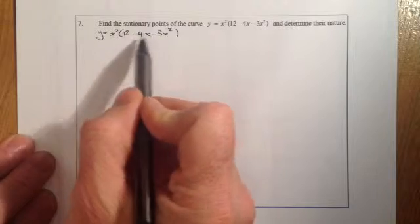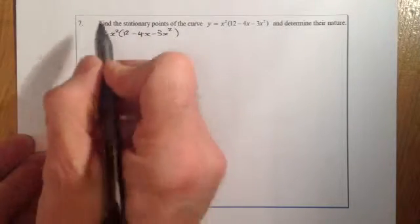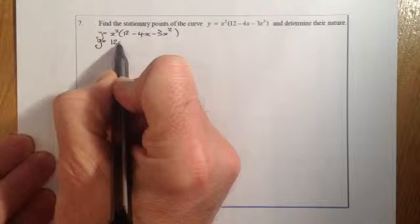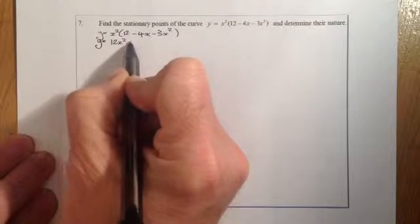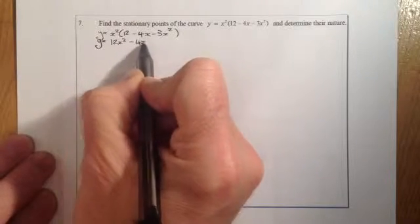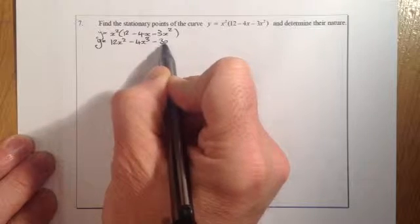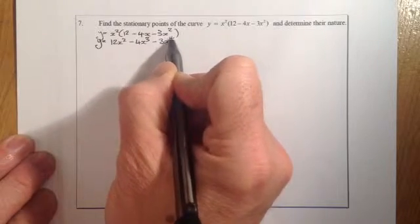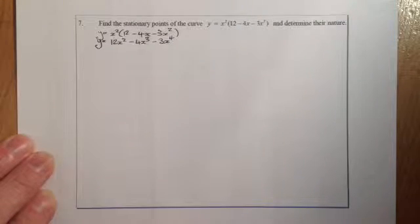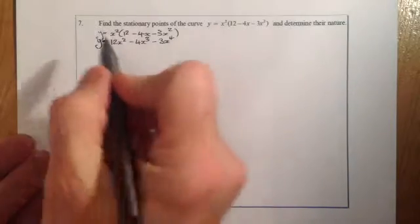What I'm going to do is multiply out that bracket by x squared. So that's going to be y equals 12x squared minus 4x cubed minus 3x to the power of 4. That's the curve multiplied out, and it's now in the state where I can differentiate it.